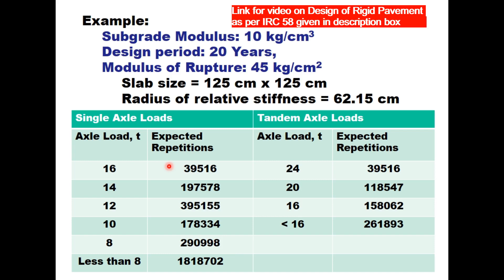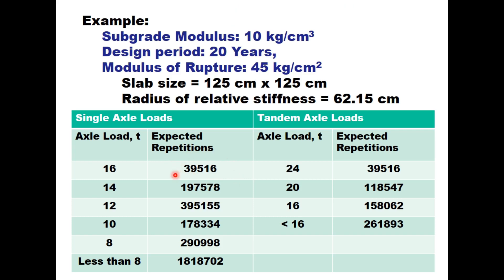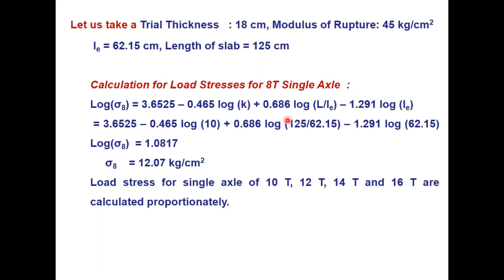The axle load spectrum at the site includes single axle loads from 8 to 16 tons and tandem axle loads from 16 to 24 tons. Expected repetitions can be determined from the proportion of axle loads in total traffic. An initial trial thickness of 18 centimeter is taken. With modulus of rupture 45 kg/cm², Le = 62.15 cm, and slab length 125 cm, we proceed to calculate stresses.